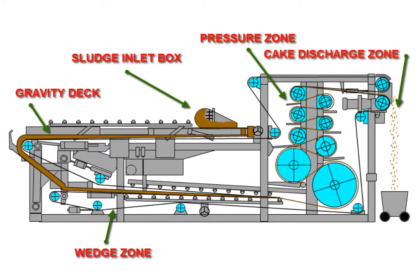The belts are finally separated at the cake discharge zone and scraper blades are used to remove the dried cake from the belts.